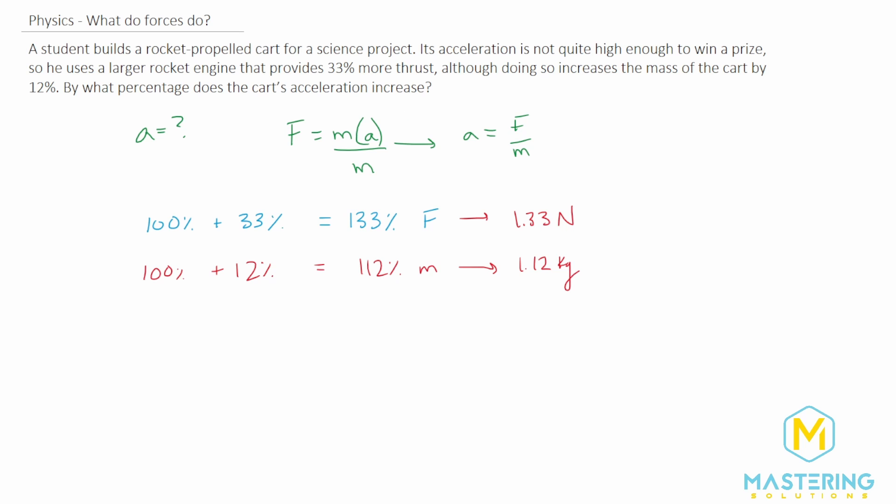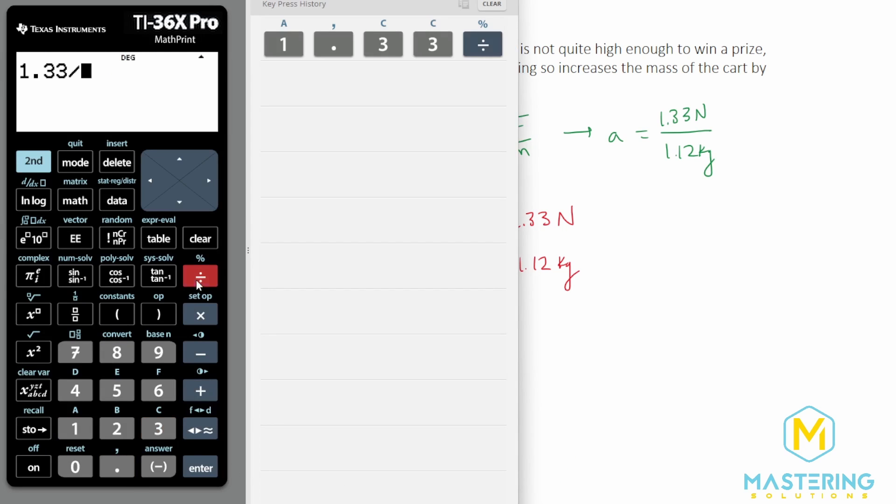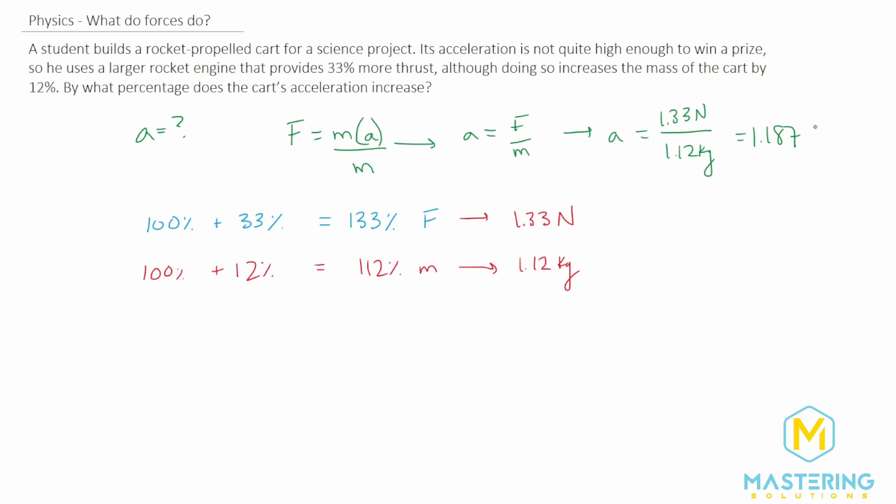And so now all we have to do is just plug it into the equation. So we have acceleration is equal to 1.33 newtons divided by 1.12 kilograms. So we have 1.33 divided by 1.12. So we have 1.1875 and so we could round this to 1.19.